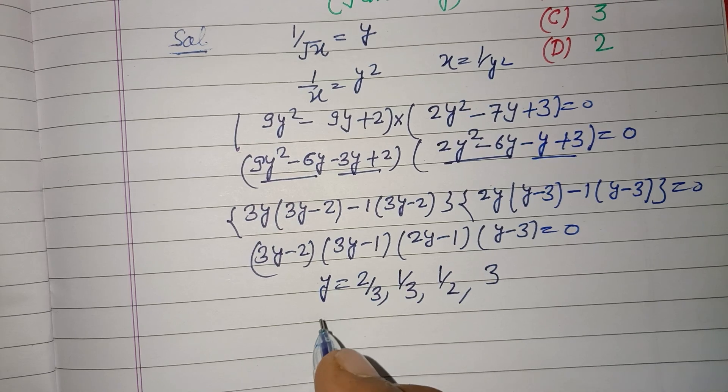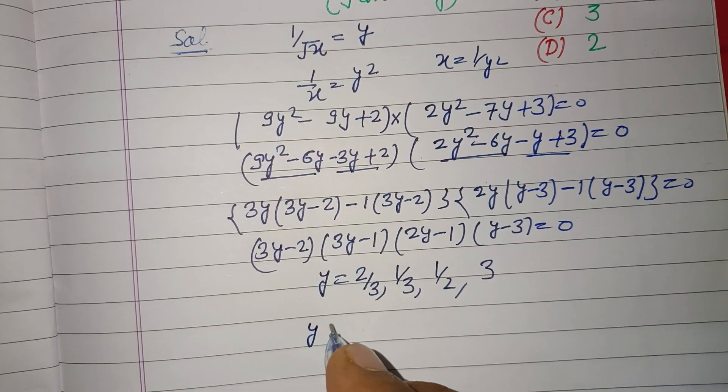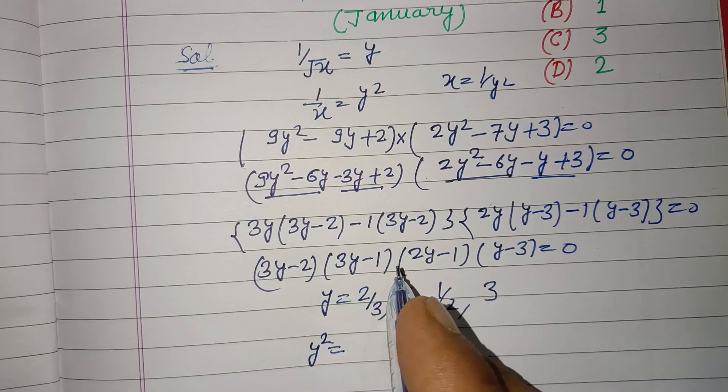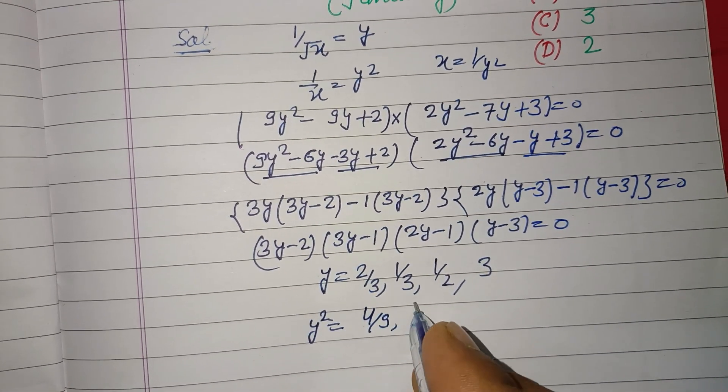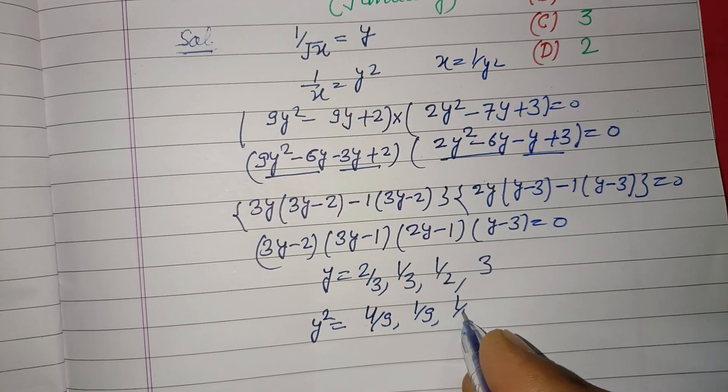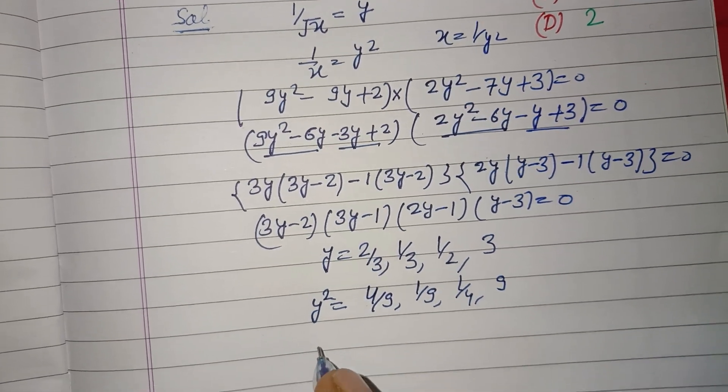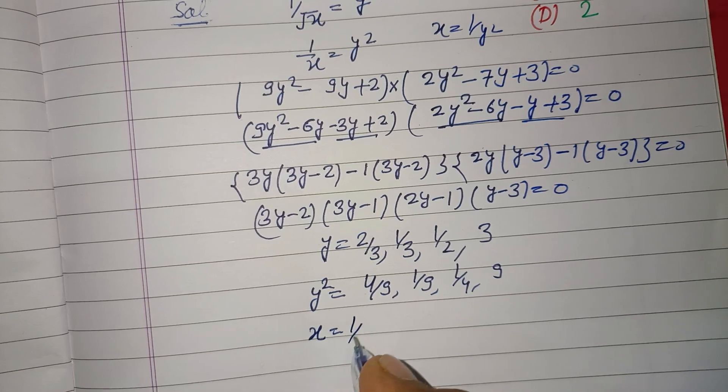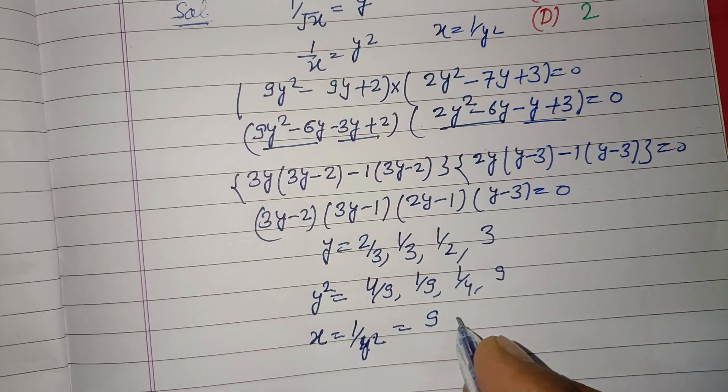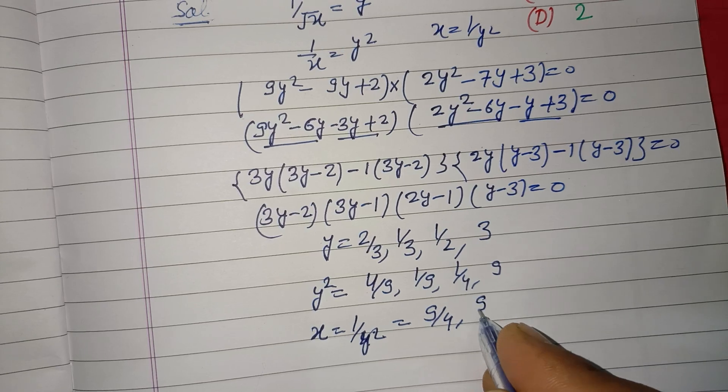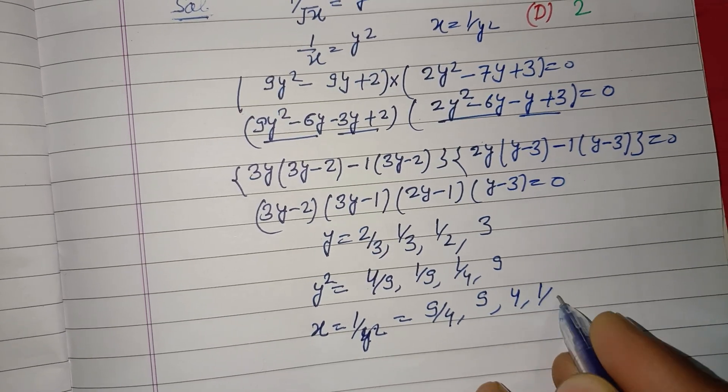Therefore y² is 4/9, 1/9, 1/4, and 9. And x is 1/y², so this is 9/4, 9, 4, and 1/9.